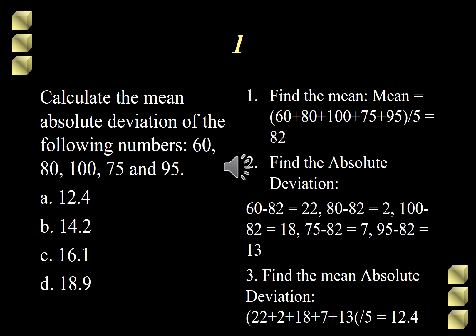So step one is to find the mean. Add all the scores 60 plus 80 plus 100 plus 75 plus 95 divided by 5 and the mean is 82. After getting the mean, step two is to get the distance or the difference or the deviation of each score from the mean. But take note, we are getting the distance, so we will be getting the absolute value of our answer.